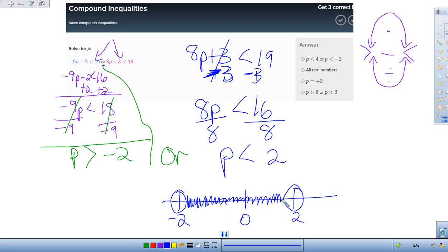But guess what? Any number that's less than 2 would work here. And so really, I would just keep going. If I put negative 2 in here, that could be negative 16 plus 3. That's negative 13. That is less than 19.